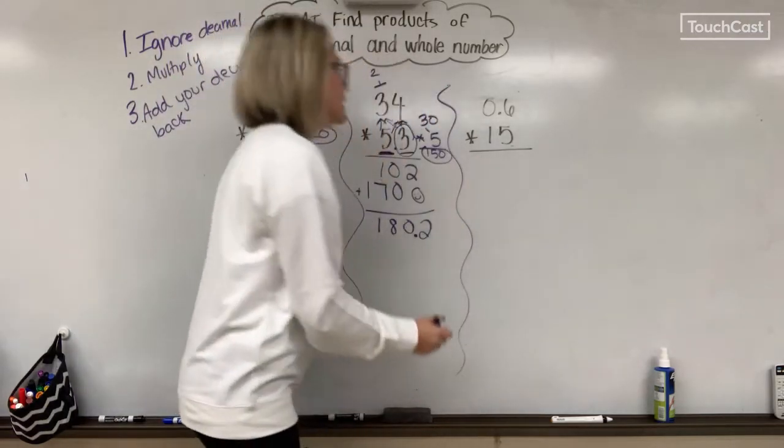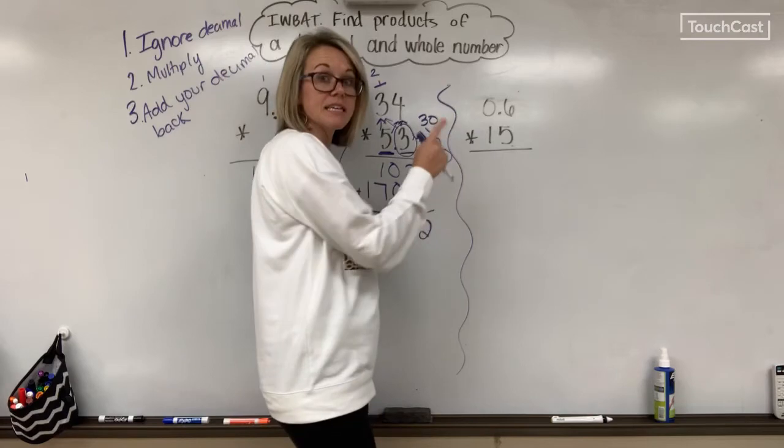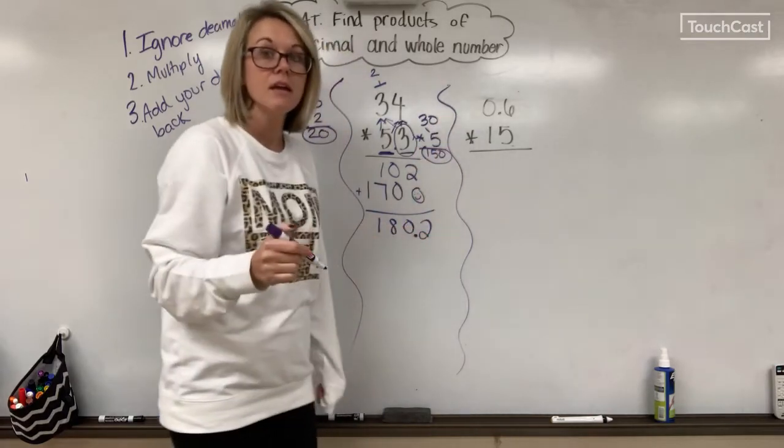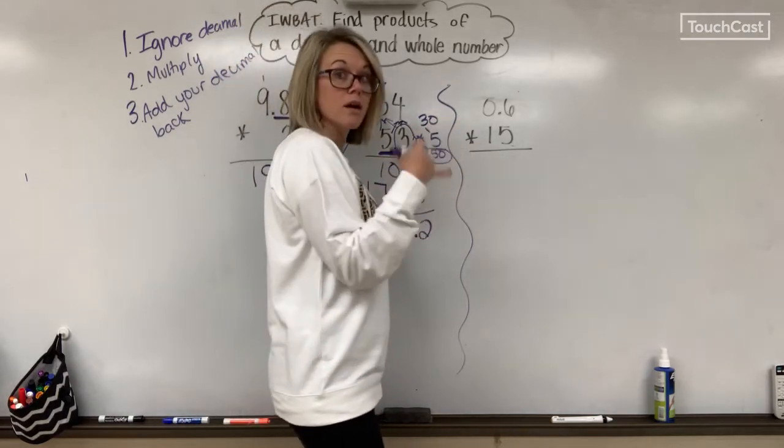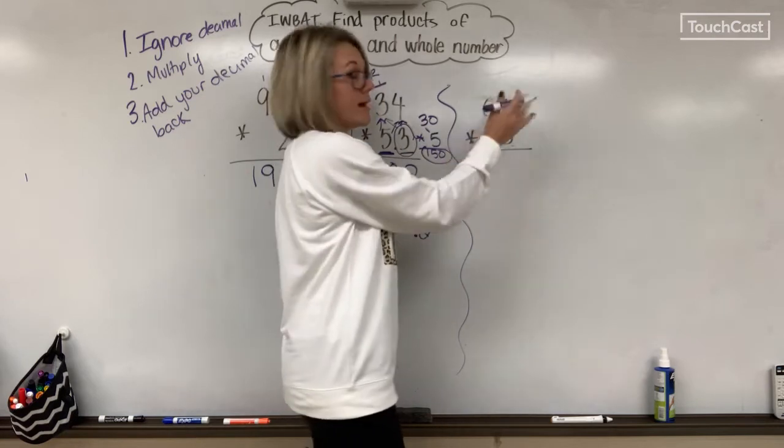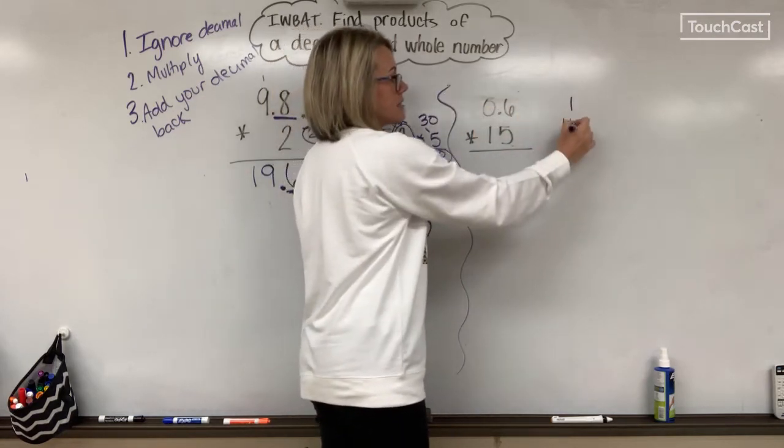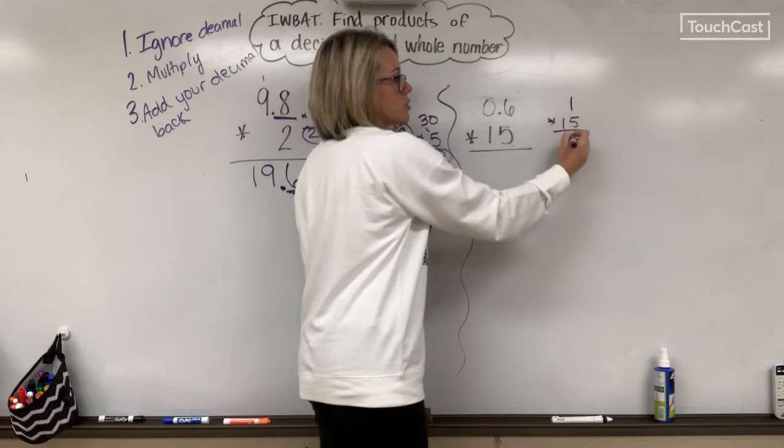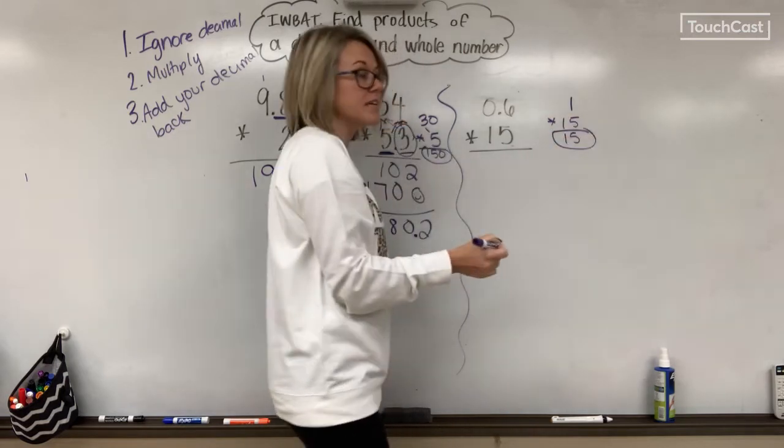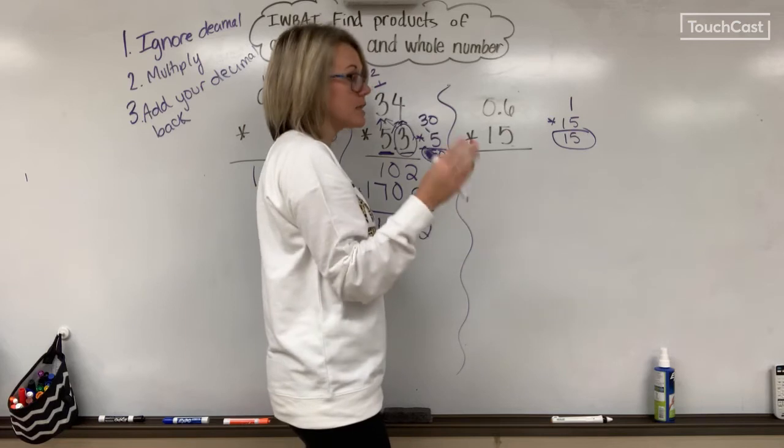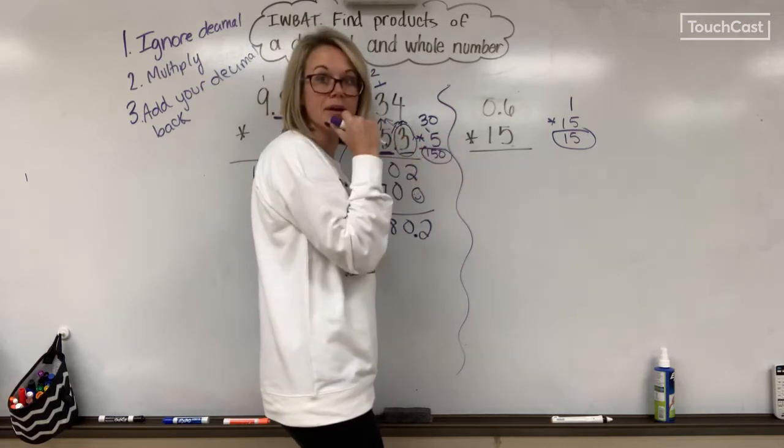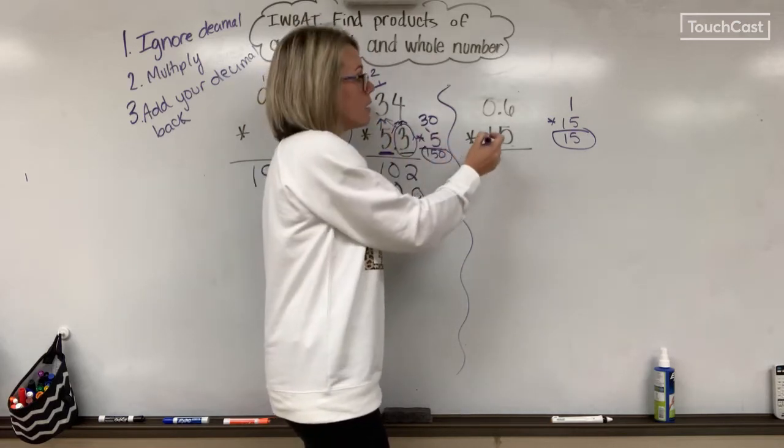The last practice. I have 0.6 times 15. I'm going to ignore my decimal, but first estimate. I know that 0.6 is close to 1. I'm going to keep 15 the same. So my answer should be close to 15. It's probably going to be a little lower because I added some extra in there when I rounded up to 1.